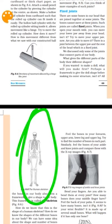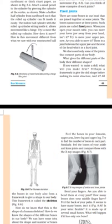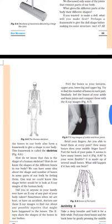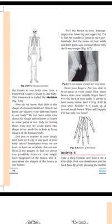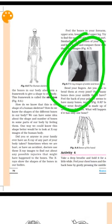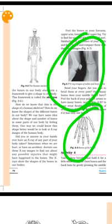The human skeleton is made up of bones. There are 206 bones in the human skeleton. The bones are going through the skeleton.